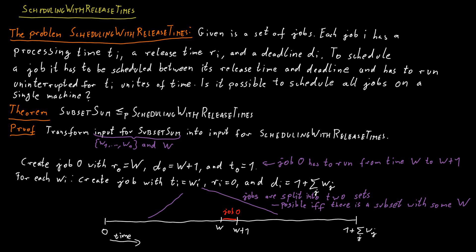It cannot be more because then the jobs would not fit before time W. It also cannot be less, because then the remaining jobs would not fit into the interval between W plus 1 and 1 plus the sum of Wj. Therefore, if we found a solution for Scheduling with Release Times, we also found a solution for Subset Sum — we just take the numbers corresponding to the jobs placed in the first part of the interval.